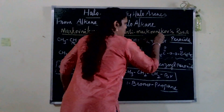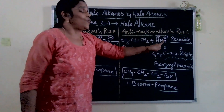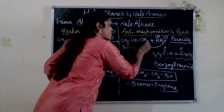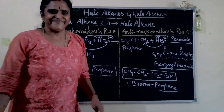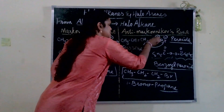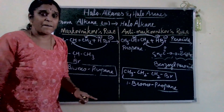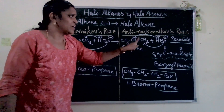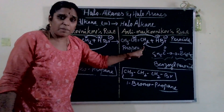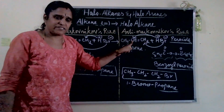In anti-Markovnikov's rule with peroxide: H+ ion and Br- ion behave differently. The negative charge (Br-) will go and attach where there is a greater number of hydrogens — because of the peroxide ion. The H+ ion will go and attach with the lesser number of hydrogens. So Br- attaches to the carbon with more hydrogens, and H+ attaches to the carbon with fewer hydrogens.